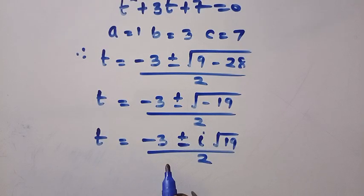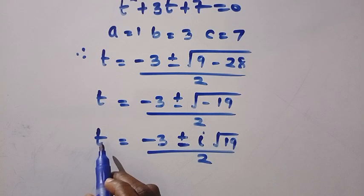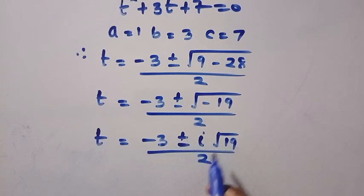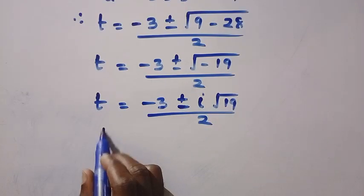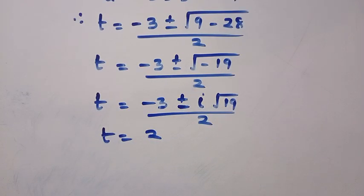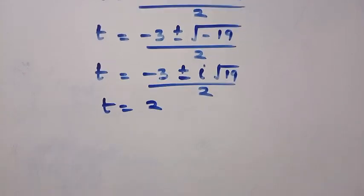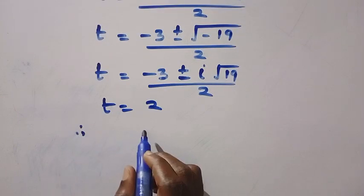Here are the other two values of t, because we have plus or minus. So t can be (-3 + i√19) / 2, and t can also be (-3 - i√19) / 2. With the first value of t that we got, which is t = 2, both of these are not the answer because we need to get the value of x. This is just an assumption to make this equation very simple to solve.